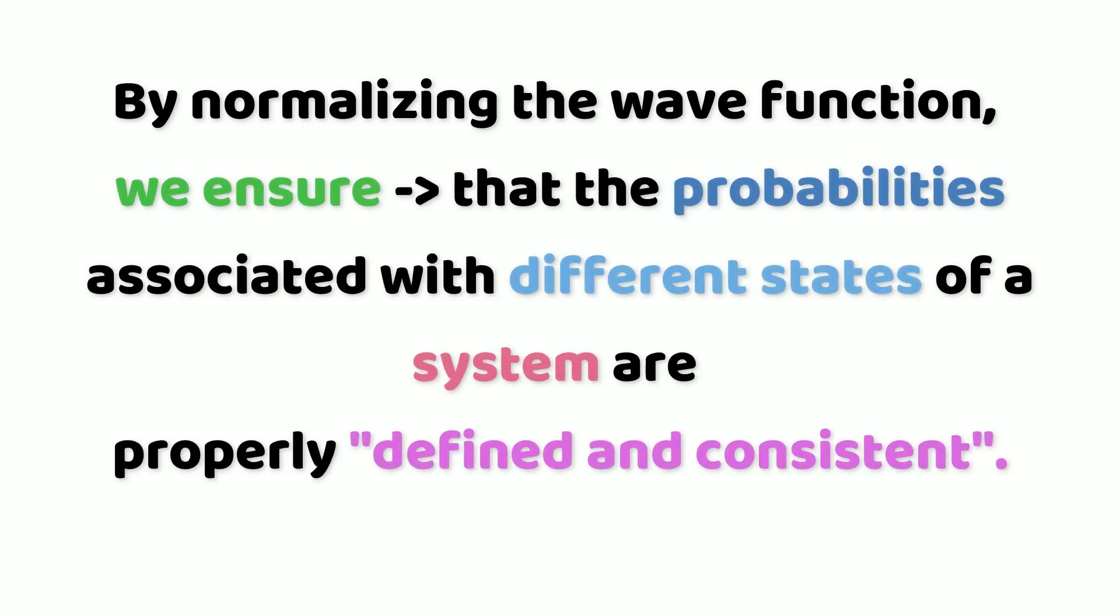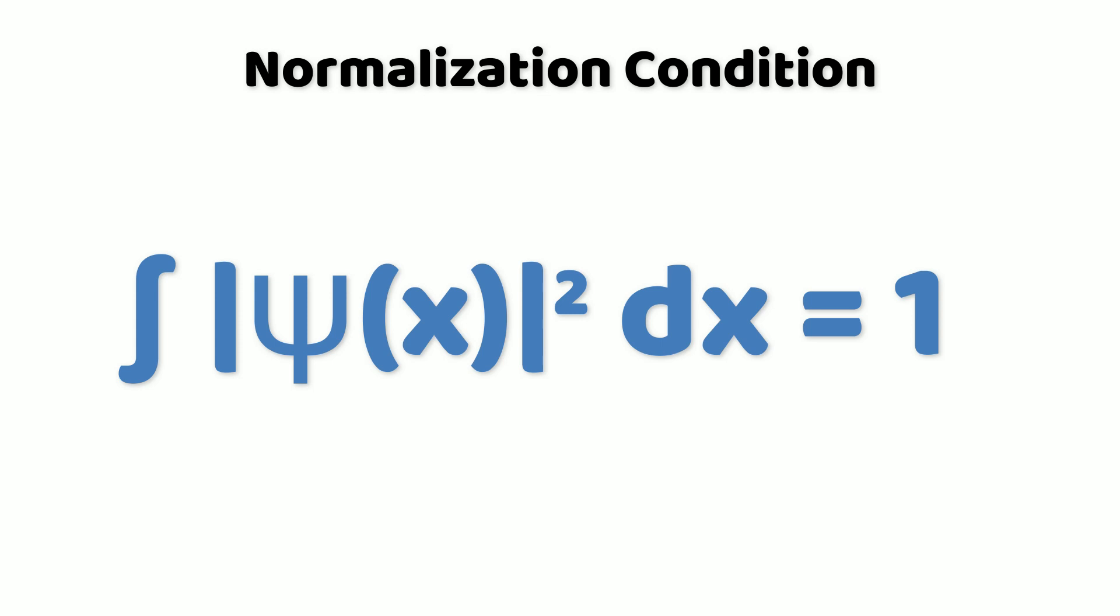By normalizing the wave function, we ensure that the probabilities associated with different states of a system are properly defined and consistent. Now, what is the normalization condition? Mathematically, normalization condition is expressed as the integral of |ψ(x)|² dx